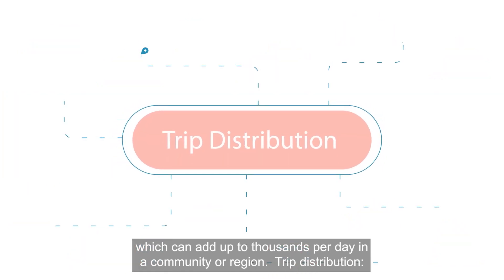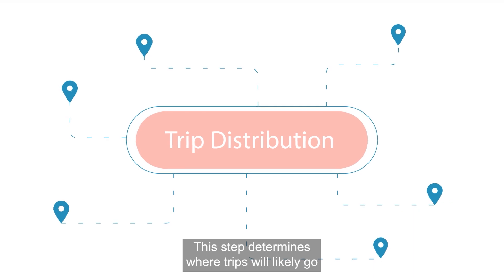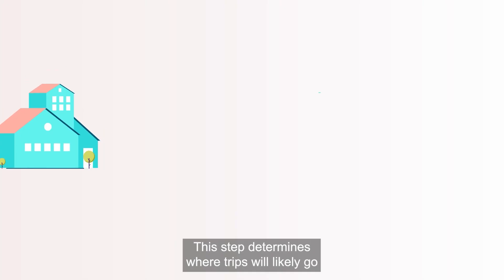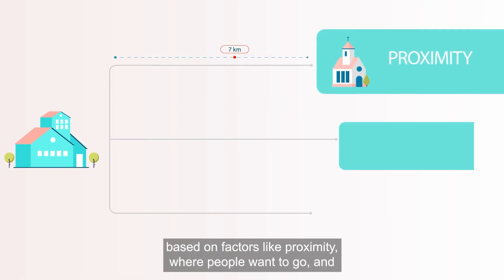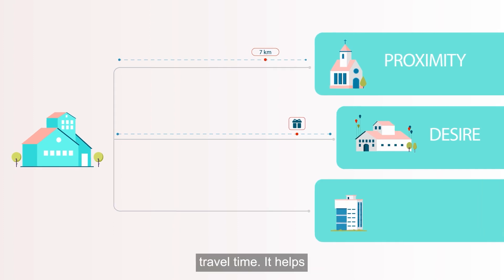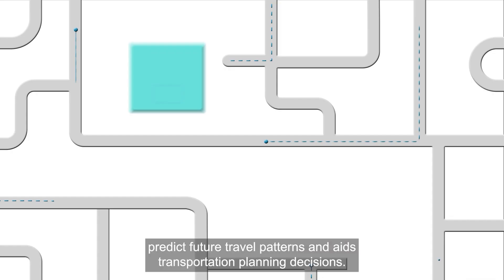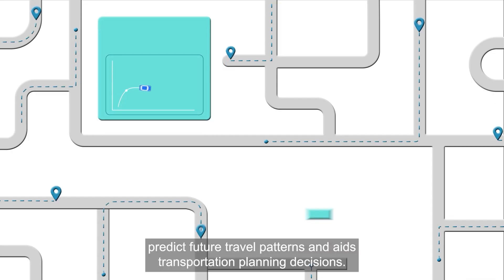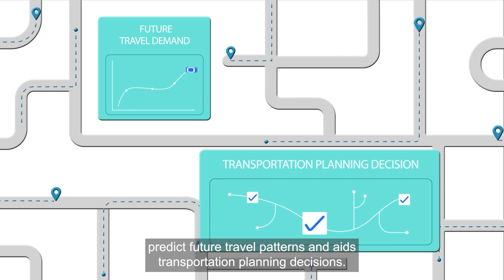Trip distribution: this step determines where trips will likely go based on factors like proximity, where people want to go, and travel time. It helps predict future travel patterns and aids transportation planning decisions.